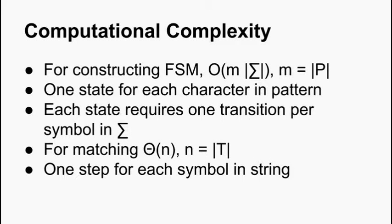So now for computational complexity. Fairly straightforward. For constructing, it's simply big O of m times the size of the alphabet, where m is the size of the pattern. Because we've got one state for each character in the pattern, and each of those states requires one transition per symbol in our alphabet, which gives us the total.